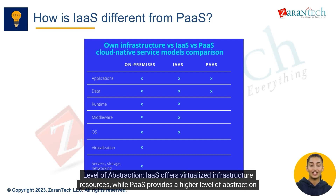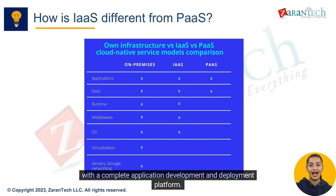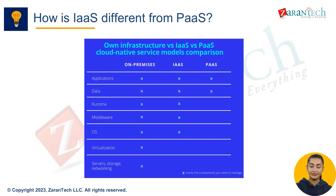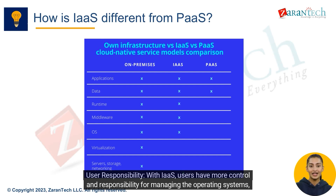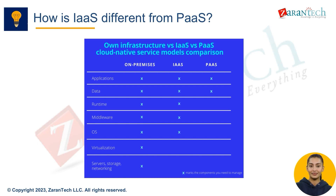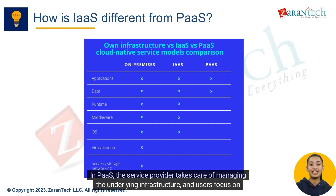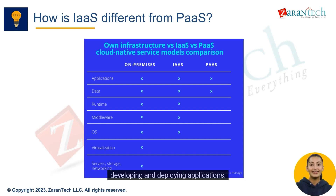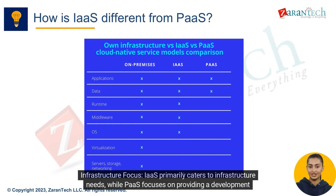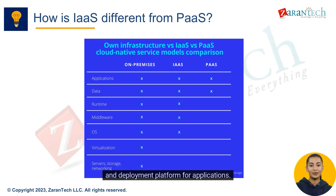Differences between IaaS and PaaS: In terms of level of abstraction, IaaS offers virtualized infrastructure resources, while PaaS provides a higher level of abstraction with a complete application development and deployment platform. With IaaS, users have more control and responsibility for managing operating systems, applications, and data. In PaaS, the service provider manages the underlying infrastructure and users focus on developing and deploying applications. IaaS primarily caters to infrastructure needs, while PaaS focuses on providing a development and deployment platform.